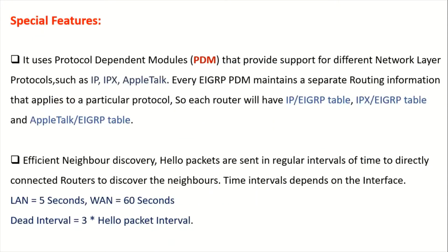A special feature of EIGRP is that it makes use of PDM — Protocol Dependent Module — which supports the use of different network layer protocols. For example, OSPF supports only IP. But because EIGRP uses PDM, it supports different network layer protocols such as IP, IPX, and AppleTalk.